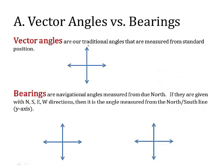Vector angles are what we consider our traditional angles that are measured from standard position. Remember, zero degrees here, 90, 180, 270, 360. Standard angles always start here and measure around counterclockwise. That's what we're talking about when we say vector angles.